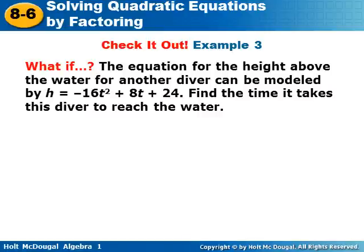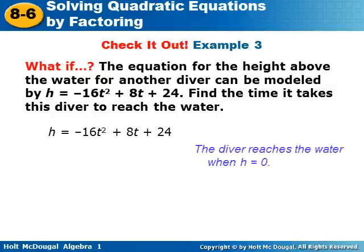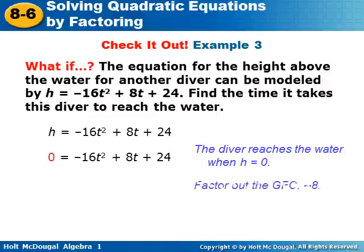What if the equation for the height above the water for another diver is modeled as h equals negative 16t² plus 8t plus 24, where the c value is different? Find the time it takes this diver to reach the water — try this one yourself. The diver reaches the water when h equals zero, so we set zero equals negative 16t² plus 8t plus 24.